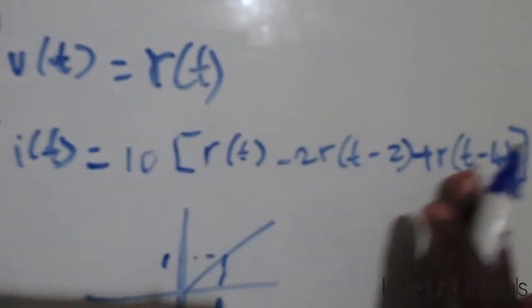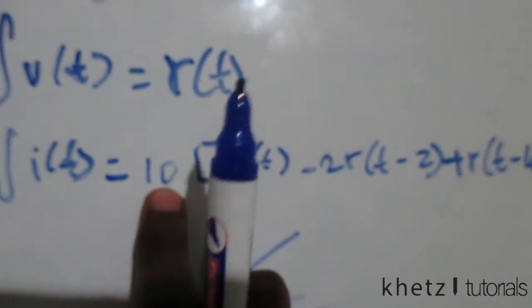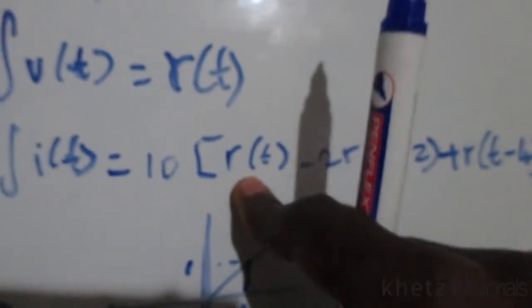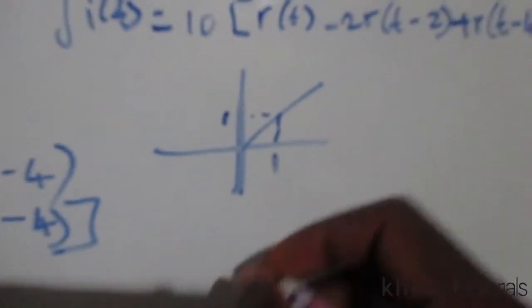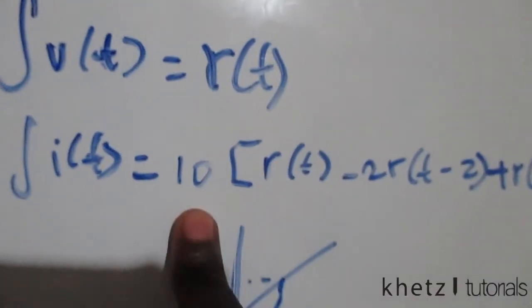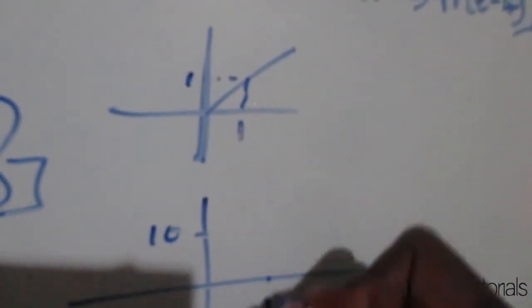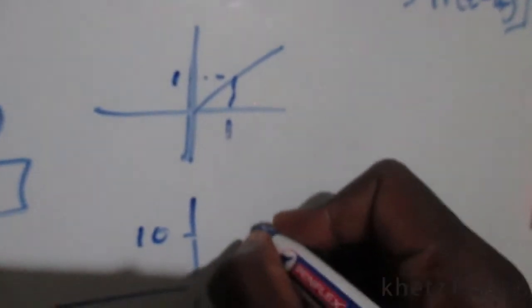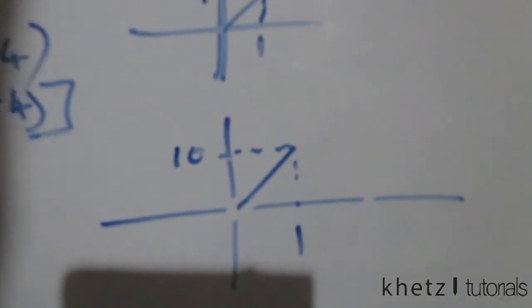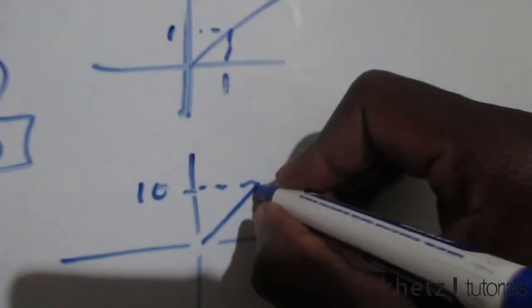Focusing on the first term, we have 10 multiplied by r(t), so the slope of our ramp function is going to be 10. It does something like this, and we expect it to continue infinitely.